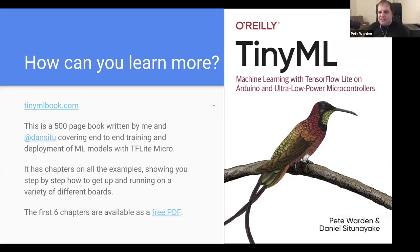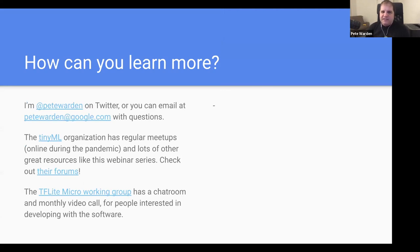Talking about how you can get more information: Pete and Dan worked on a book last year — it's about 500 pages, nice and thick if you need a doorstop. It has a whole bunch of the open-source examples that he mentioned, and explains how to get those examples up and running. You can actually grab the first six chapters as a free PDF from tinymlbook.com. You can reach Pete at @PeteWarden on Twitter or by email at petewarden@google.com. There's also a SIG micro group with a chat room and a monthly video call for people interested in TensorFlow Lite Micro development.